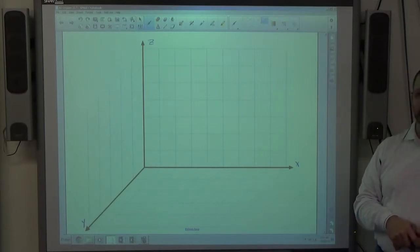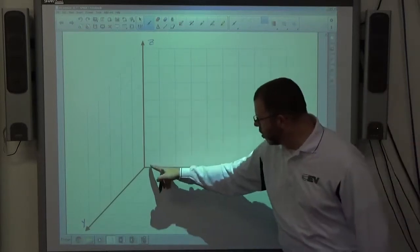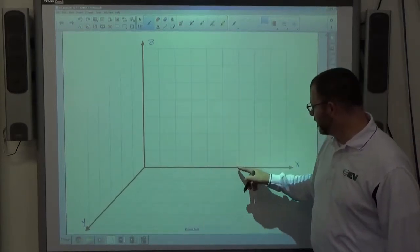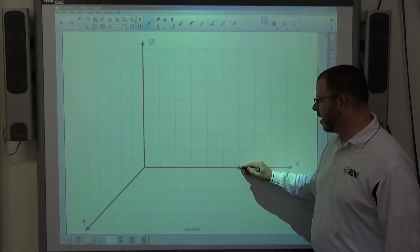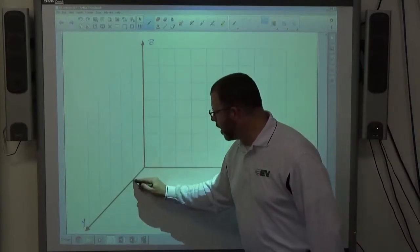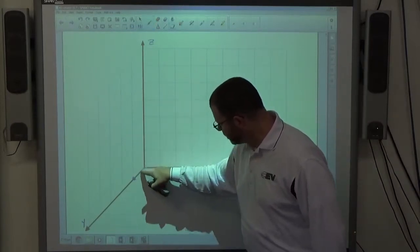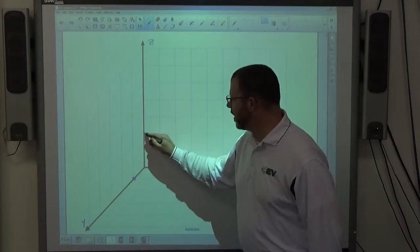To graph three-dimensional space, it's kind of weird graphing. It's kind of like drawing a rectangular solid. So, I go one, two, three, four, five, six spaces on the x-axis, put a dot. I go one space on the y-axis, put a dot. And, I go two spaces up on the z-axis, and put a dot. That's the first step.